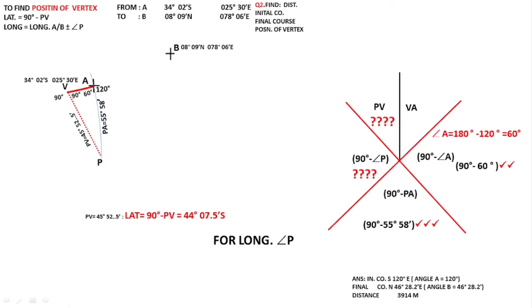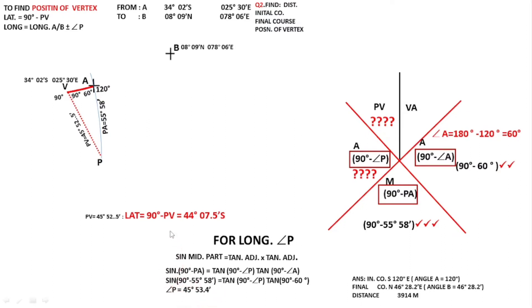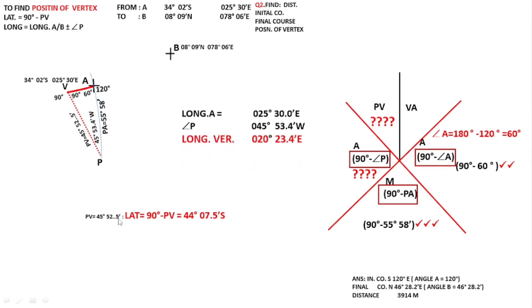I am writing down only the value of PV, not the latitude, because PV will be used when calculating intermediate points. For longitude of the vertex I have to find out angle P. I use angle P as the middle part and the two adjacent sides with the tan-adjacent formula. Substituting all those values, I have got 45 degrees. If you notice, I have written down west here — the longitude of the vertex is west of the longitude of A. So you must be careful which way your D-long is, depending on which triangle you are using. Knowing longitude of A and the D-long, I can find the longitude of the vertex.